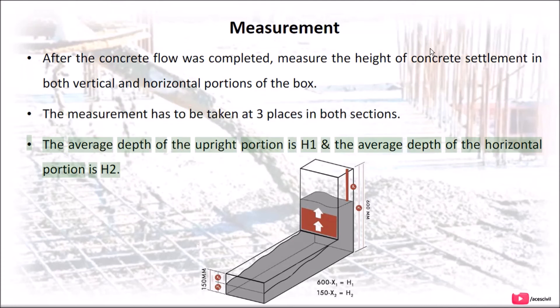The average depth of the upright portion is H1 and the average depth of the horizontal portion is H2.